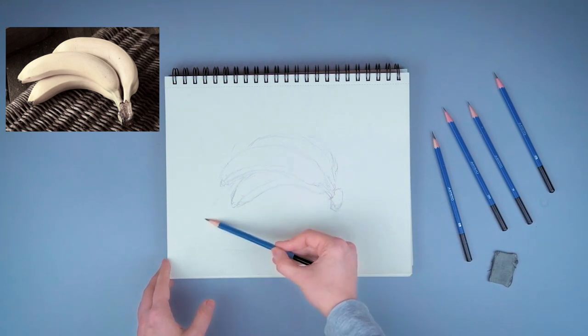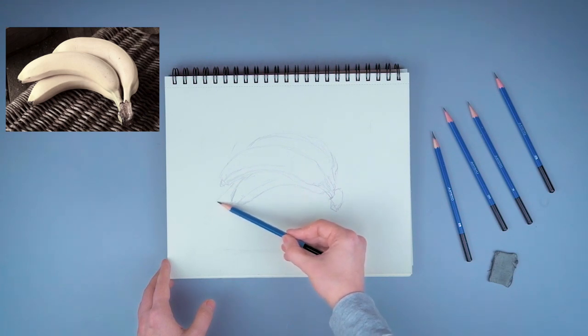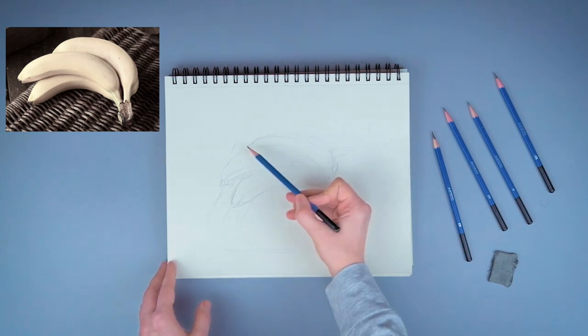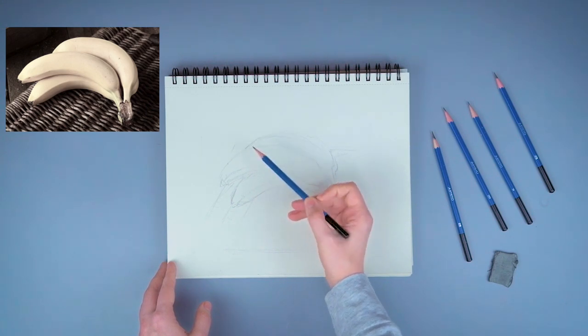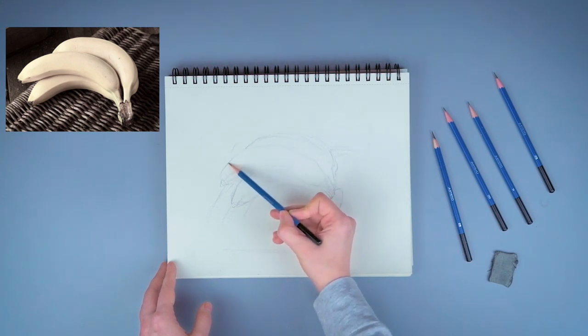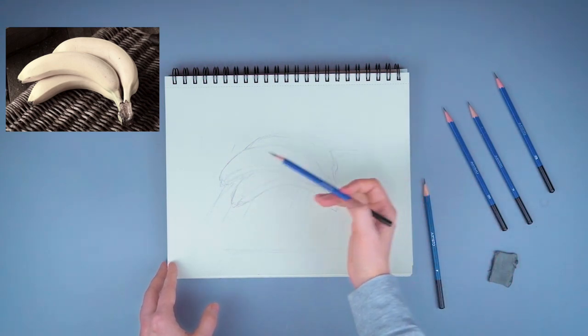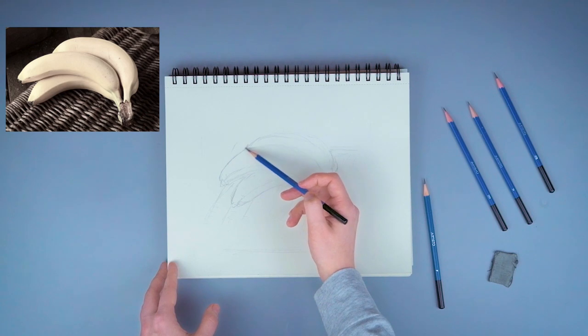Then you can start adding some of the details. I'm trying to stay away from adding too much light and shadow. I just want to add in some contouring lines as my guideline so I can come back in there and add in the highlight and shadow. Once everything is correct, then you're going to be allowed to go in there and add in all of your details and shadows and highlights.